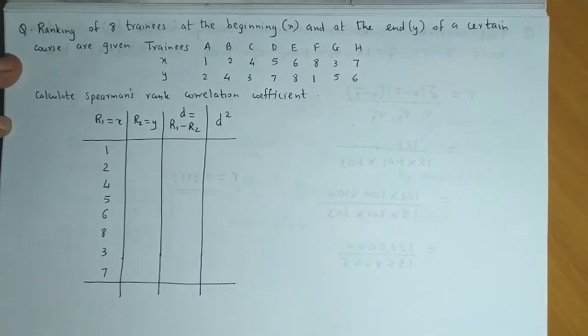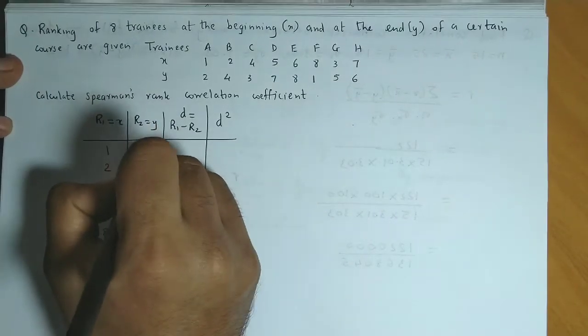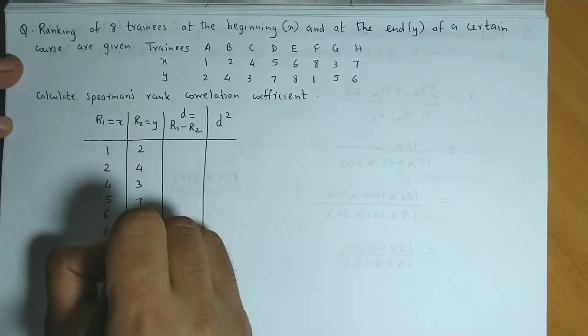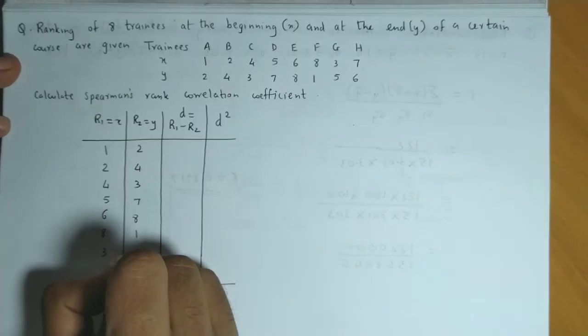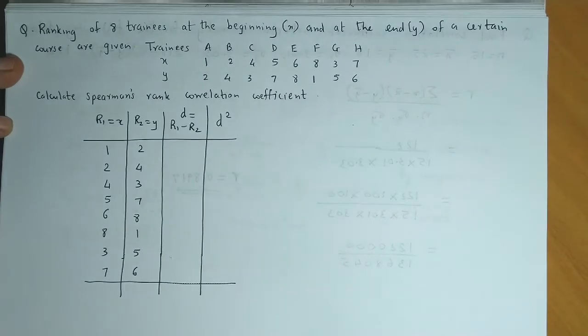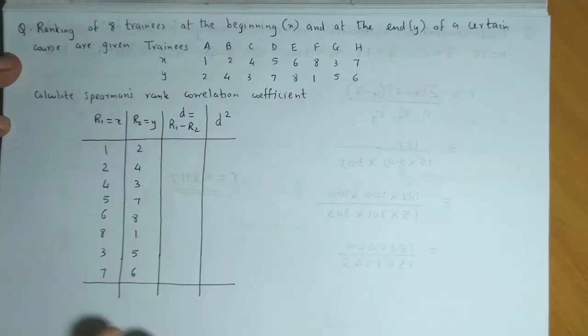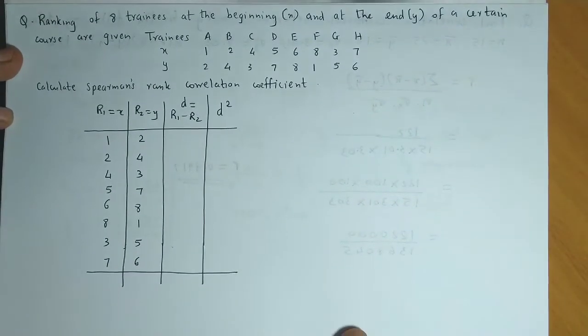Now the ranks at the end are 2, 4, 3, 7, 8, 1, 5, and 6. Now none of the ranks are repeated, so this is a case of non-repeated ranks.